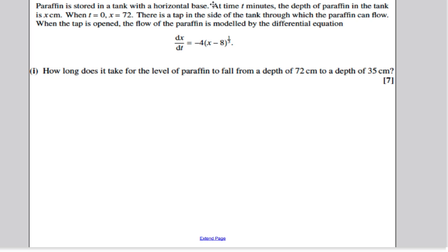It tells us about paraffin being stored in a tank. At time t, the depth of the tank is x centimeters. So x represents depth of tank and t represents time. It tells us when t is 0, x is 72. That's to say, at the start of this process, there is 72 centimeters of paraffin in the tank.